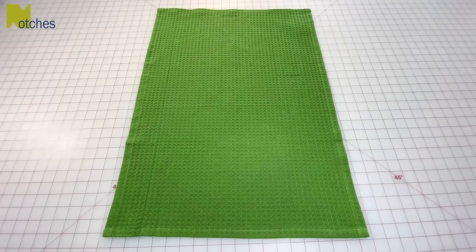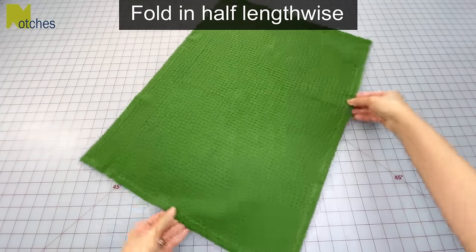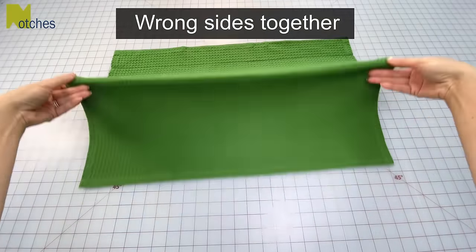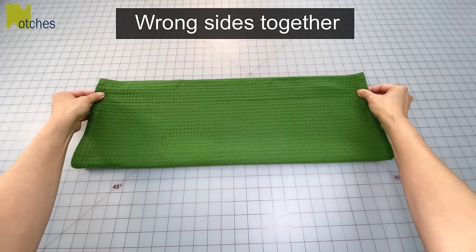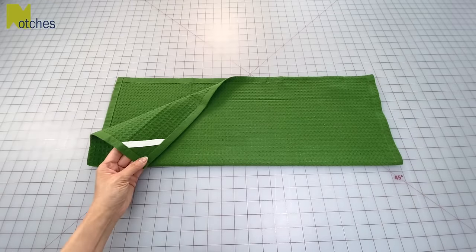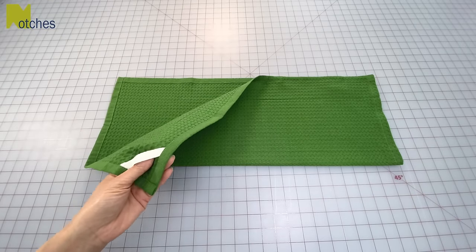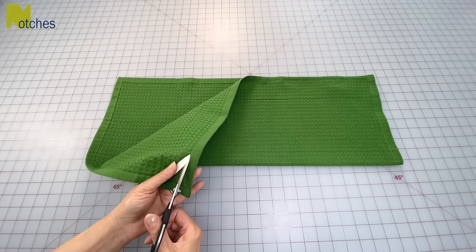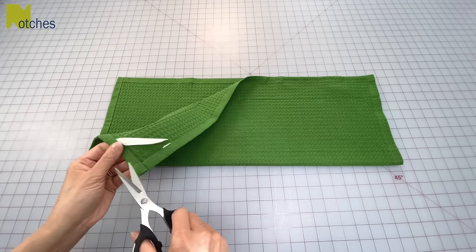Use any size tea towel and fold it in half lengthwise with wrong sides together. Because I don't pre-wash the towels I'm going to leave the care label on but I will remove this little hanging strap.